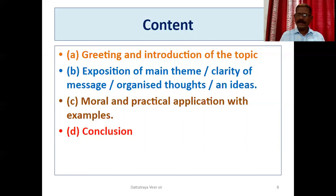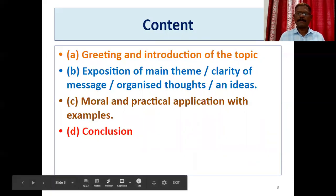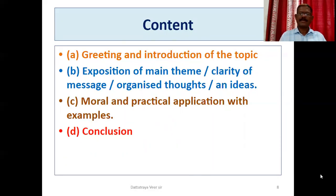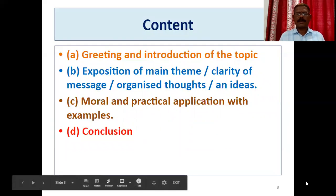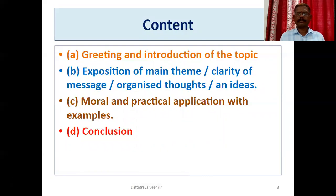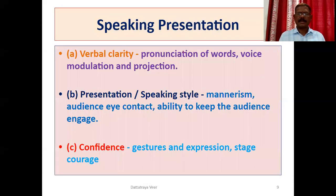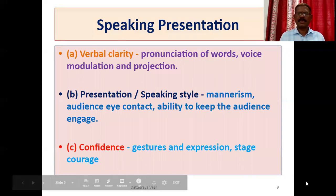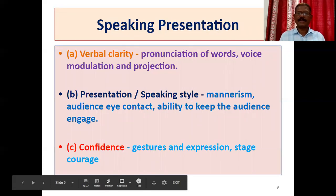The second point is exposition of the main theme. What main theme is there — his childhood, his education, and everything. Clarity of message and organized thoughts and ideas are important. The purpose is to express about Chhatrapati Shivaji Maharaj. Moral and practical application with examples is very important. There should also be a conclusion. Beginning, conclusion, moral, practical applications, and examples must all be there.